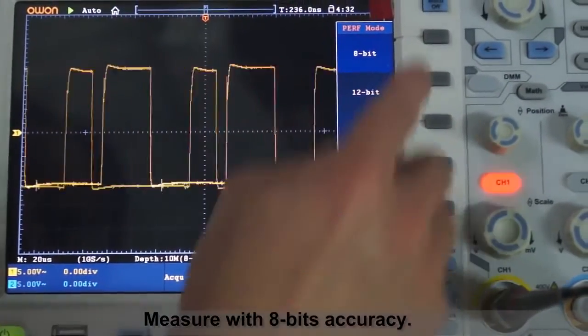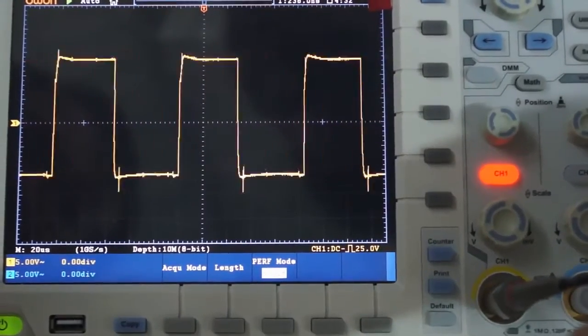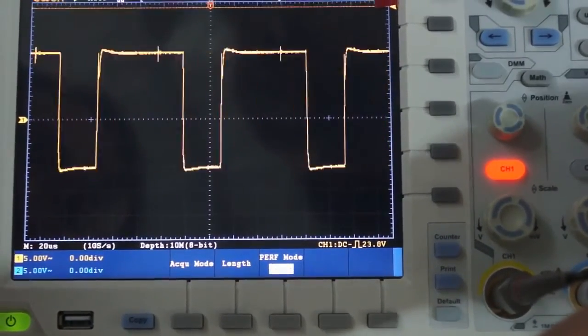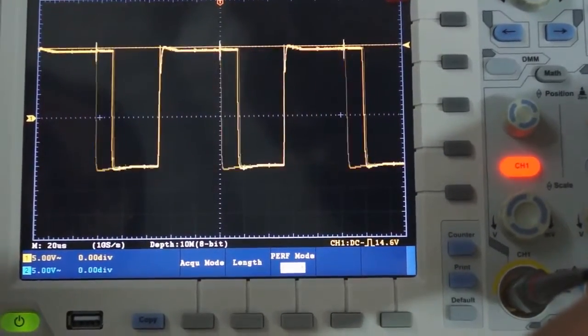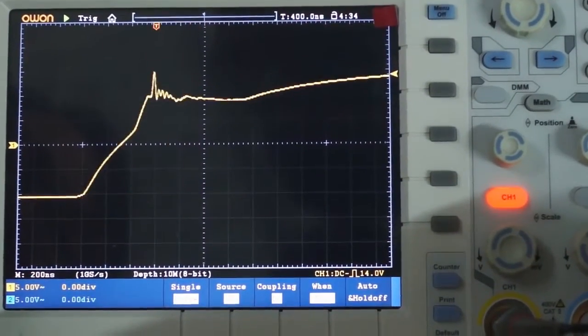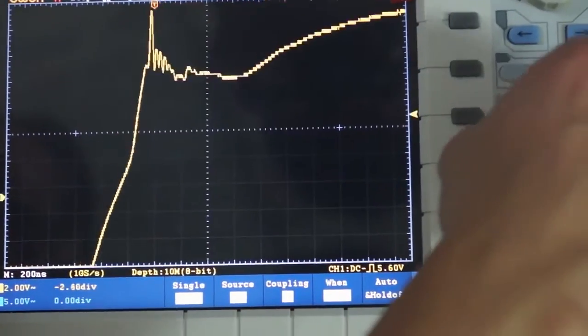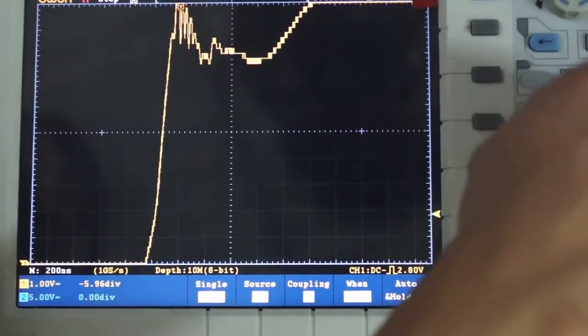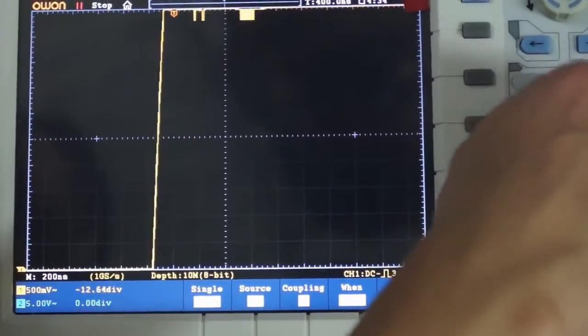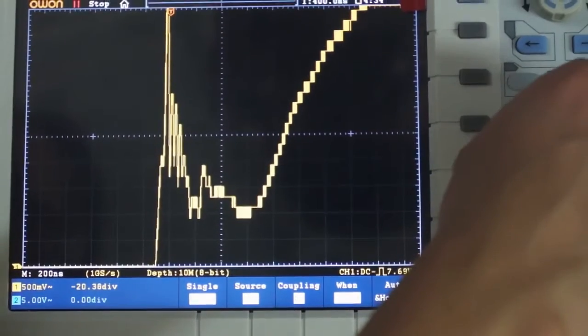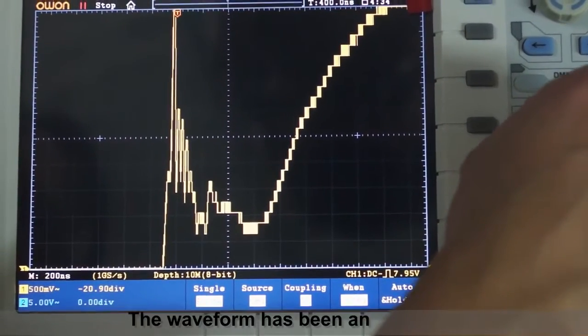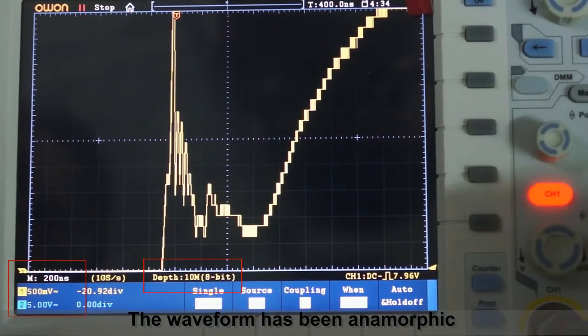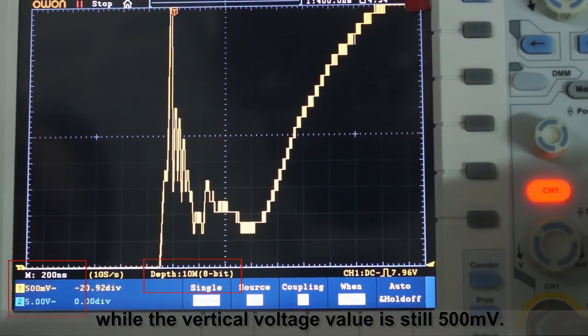Measure with 8-bit accuracy. The waveform has been anamorphic while the vertical voltage value is still 500 microvolts.